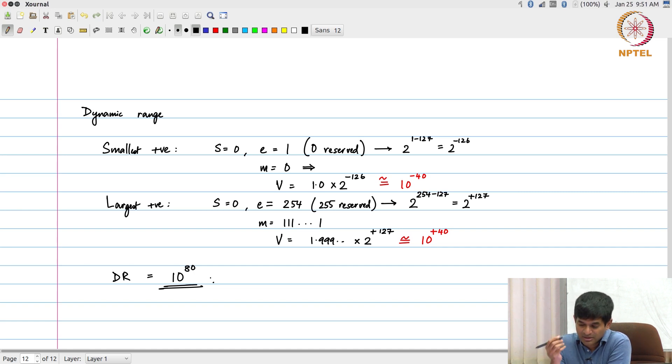Having said that, what I have described so far is something called single precision floating point. Why floating point versus fixed point?